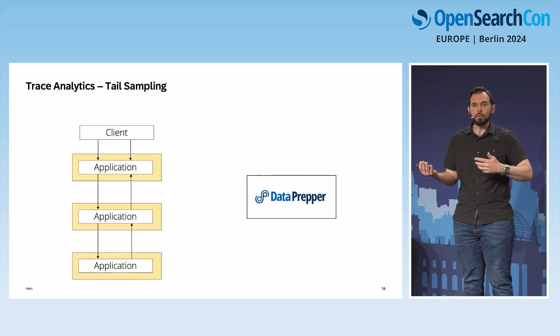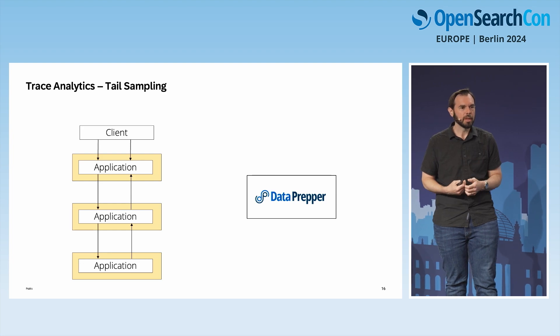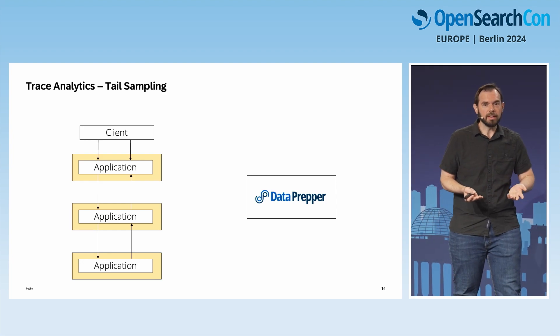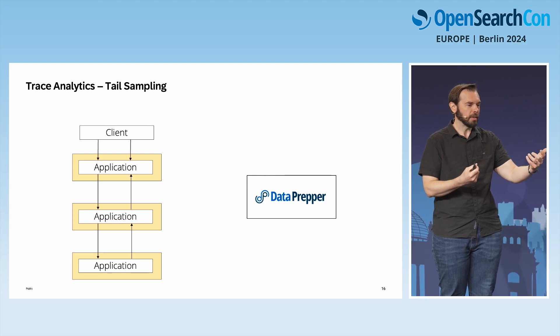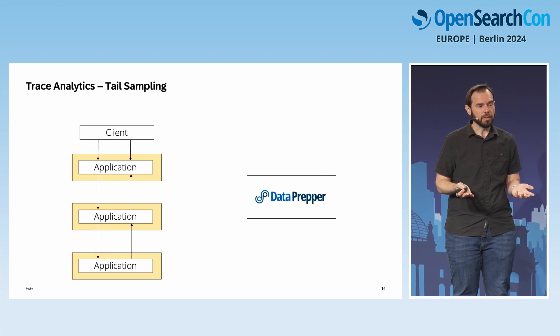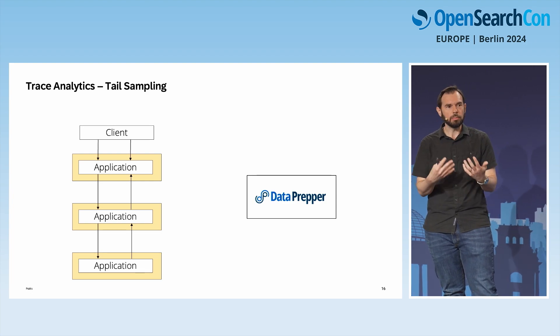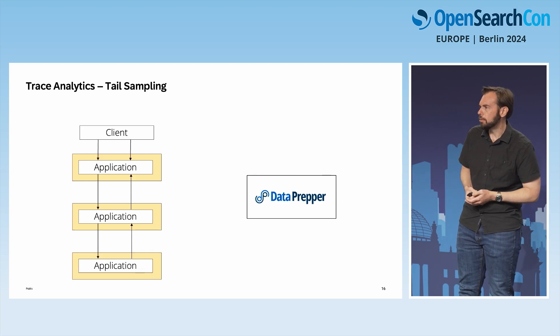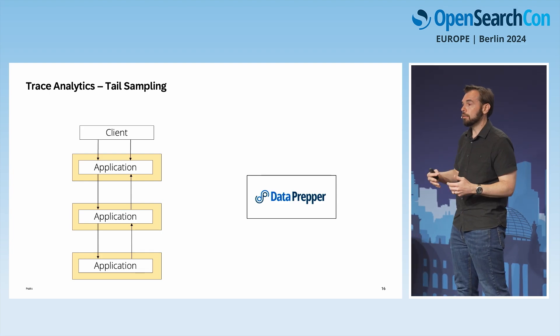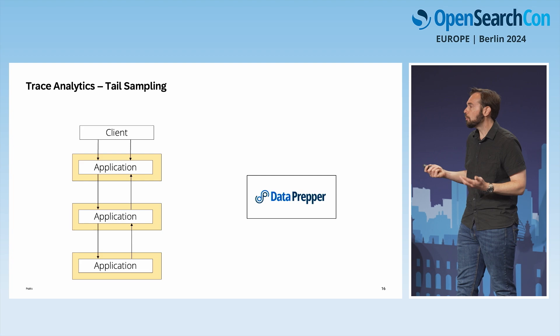I want to talk about tail sampling, a feature we offer with trace analytics. You get many web requests and at some point you'll want to sample data. Sampling logs is straightforward — a log has everything you need to decide. But it's more complicated with traces, because the sampling decision needs to be made on the whole trace. You don't want to sample spans, because then you'll have partial traces. So you sample at the trace level.